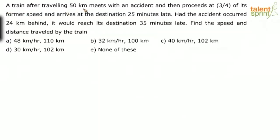A train after traveling 50 kilometers meets with an accident and then proceeds at three-fourth of its former speed and arrives at the destination 25 minutes late. Had the accident occurred 24 kilometers behind, it would have reached its destination 35 minutes late. Find the speed and distance traveled by the train.